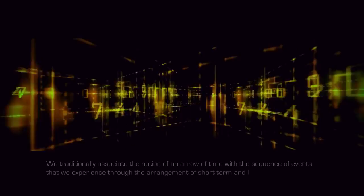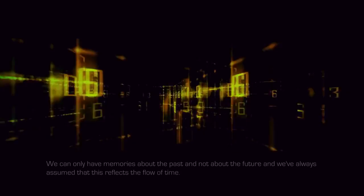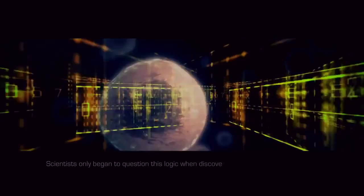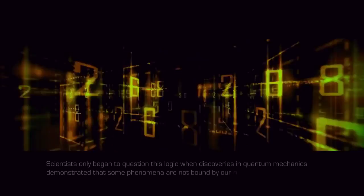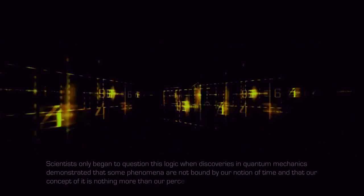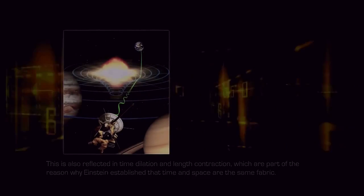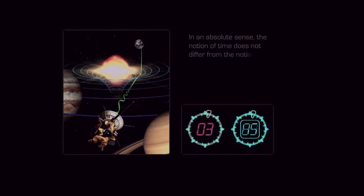We traditionally associate the notion of an arrow of time with the sequence of events that we experience through the arrangement of short-term and long-term memories. We can only have memories about the past and not about the future, and we've always assumed that this reflects the flow of time. Scientists only began to question this logic when discoveries in quantum mechanics demonstrated that some phenomena are not bound by our notion of time, and that our concept of it is nothing more than our perception of the change in observable values. This is also reflected in time dilation and length contraction, which are part of the reason why Einstein established that time and space are the same fabric. In an absolute sense, the notion of time does not differ from the notion of distance.